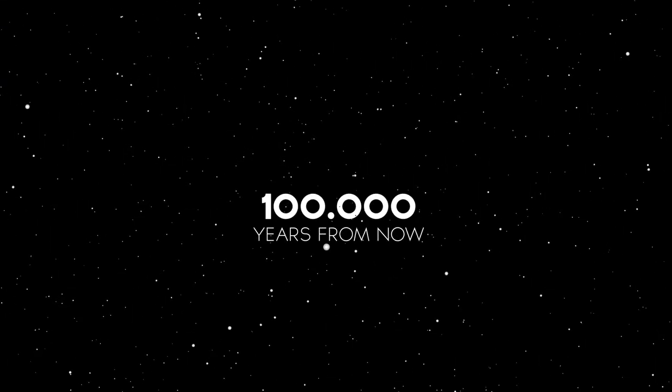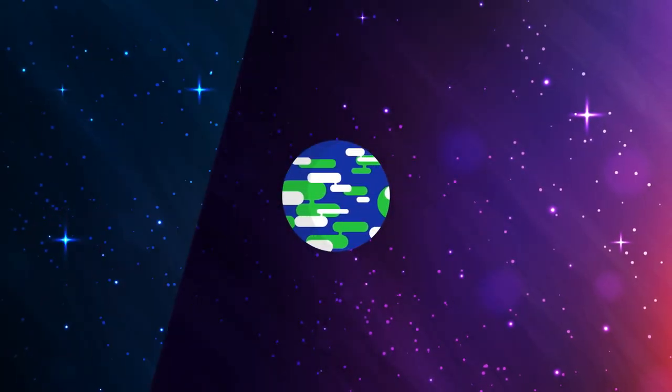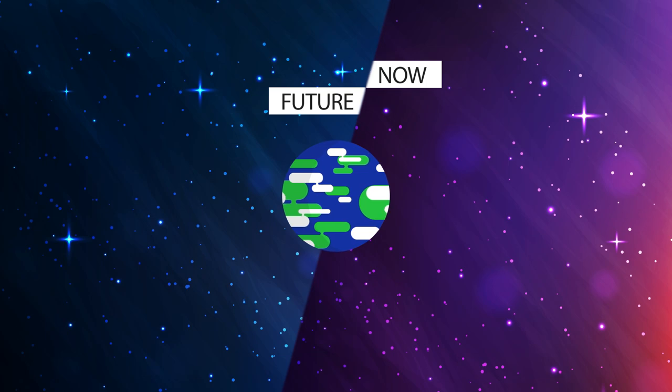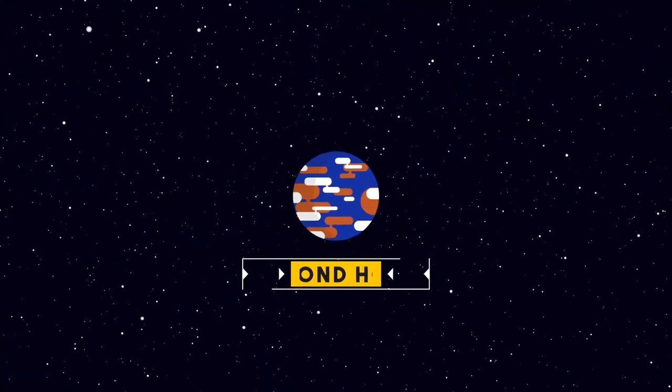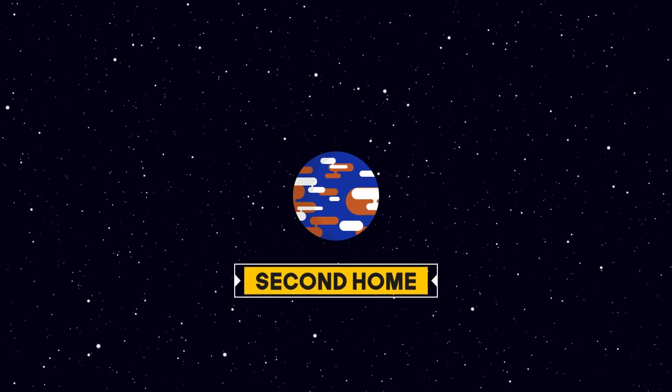One hundred thousand years from now, the projection of the universe on Earth will change due to its movement through the Milky Way. And in that era, terraforming Mars will be finished, and the planet will be a habitable place similar to Earth.